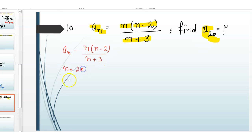Now put n equals 20, then it will be a_20 equals 20 times 20 minus 2 divided by 20 plus 3, which is 23.